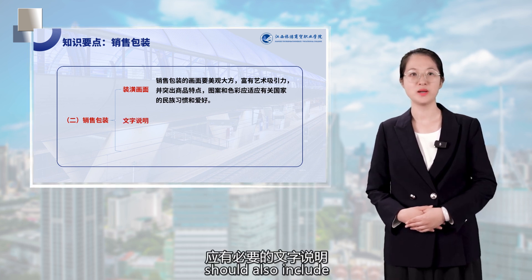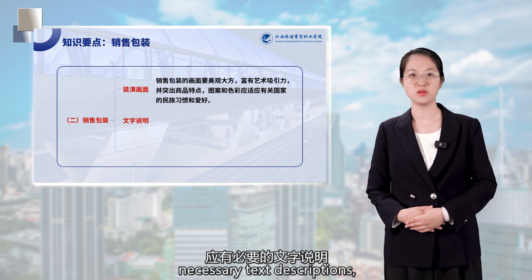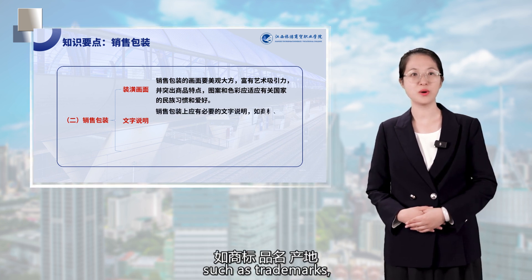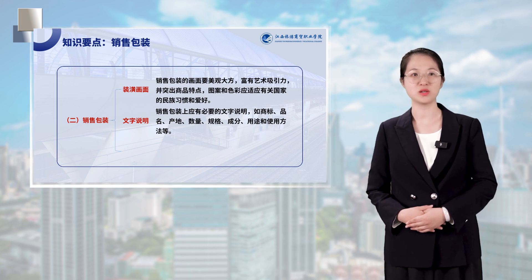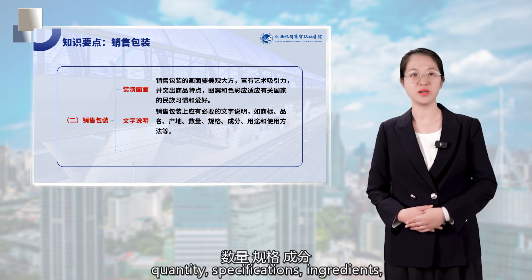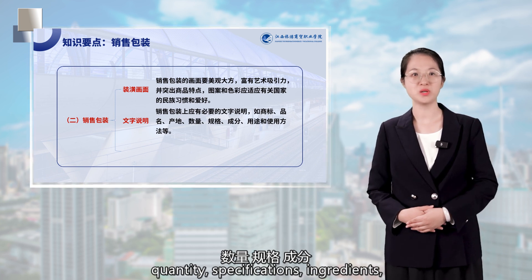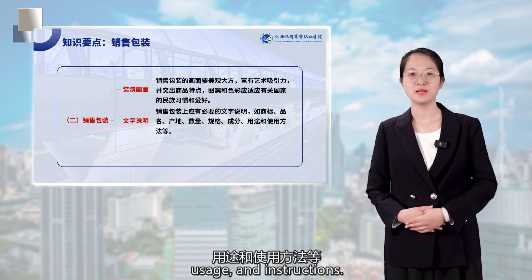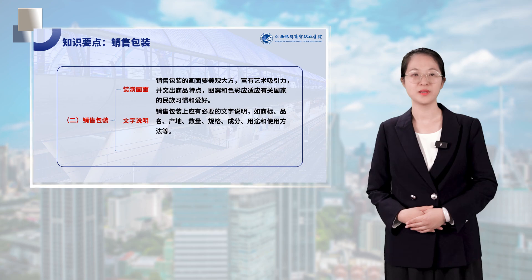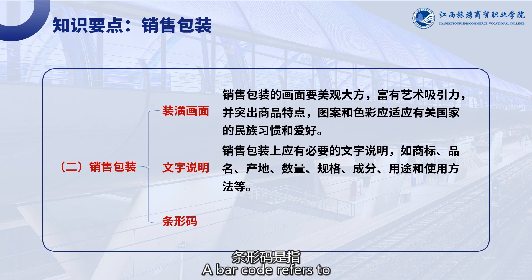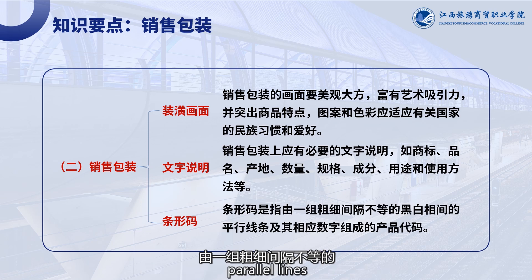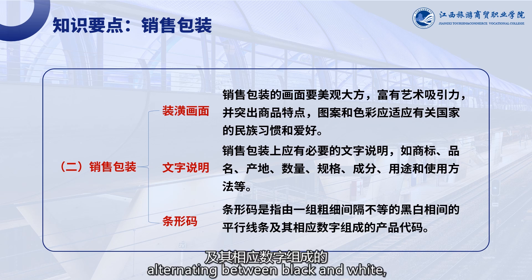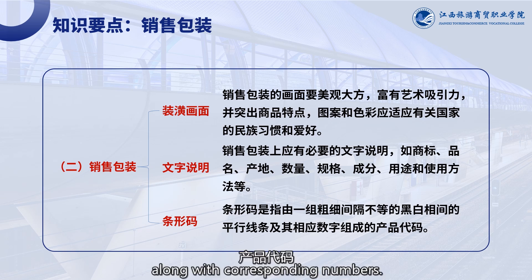Sales package should also include necessary text descriptions such as trademarks, product names, place of origin, quantity, specifications, ingredients, usage, and instructions. A barcode refers to a product code consisting of a series of parallel lines of varying thickness, alternating between black and white, along with corresponding numbers.